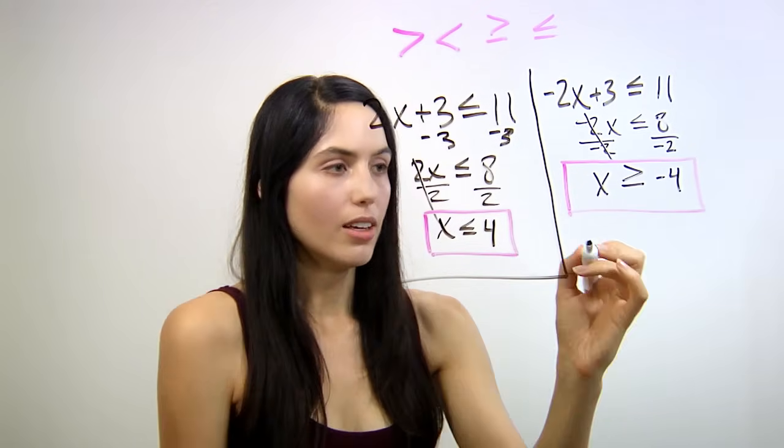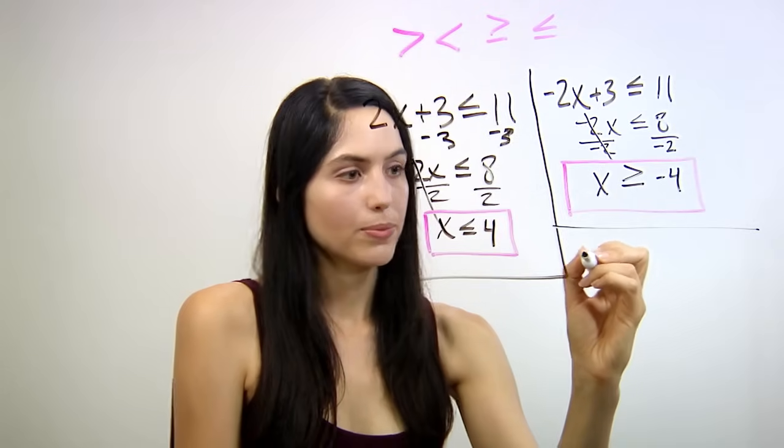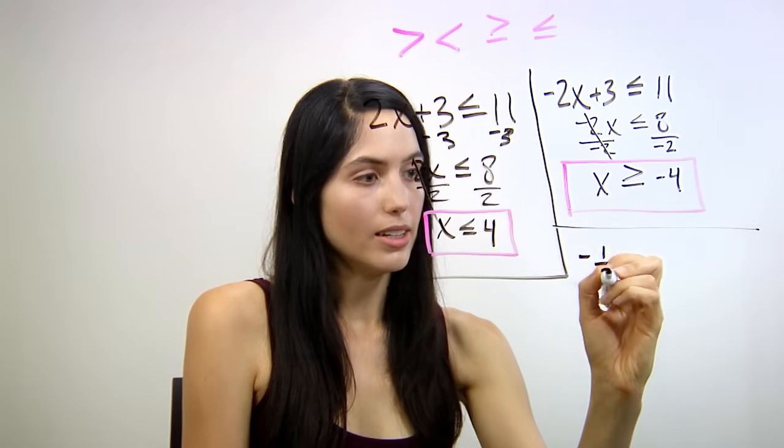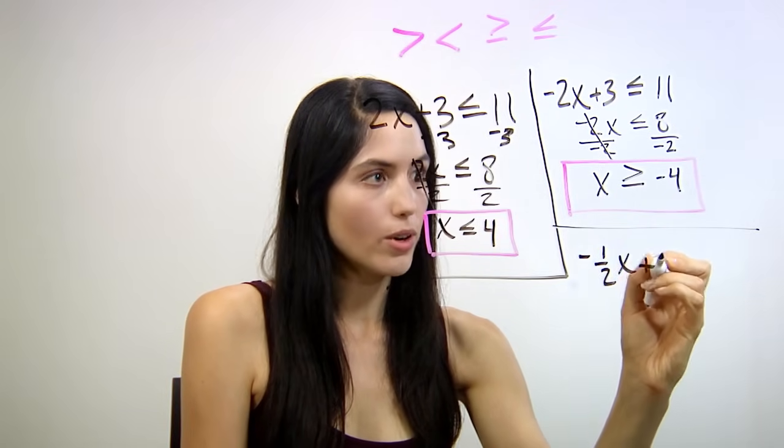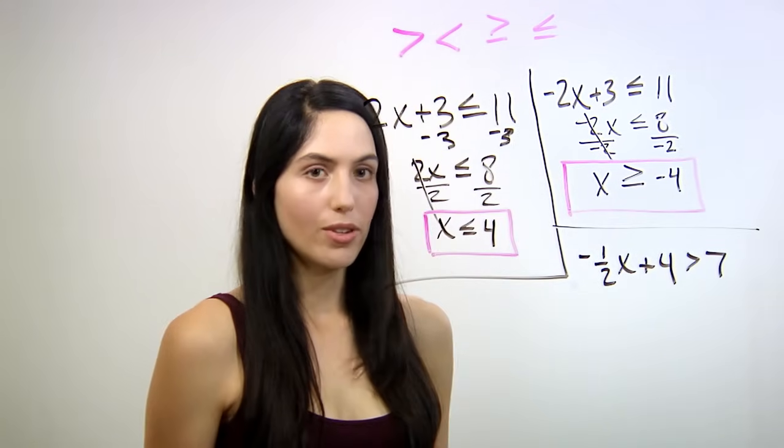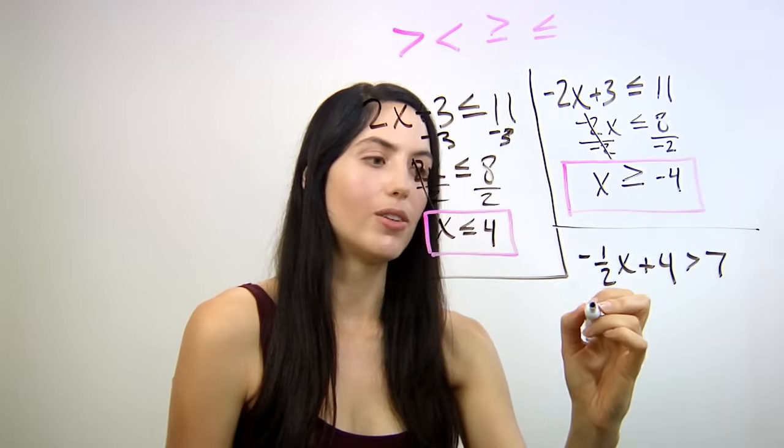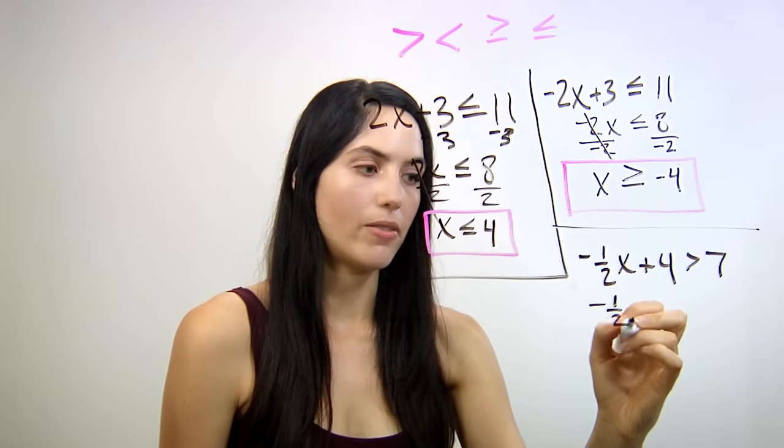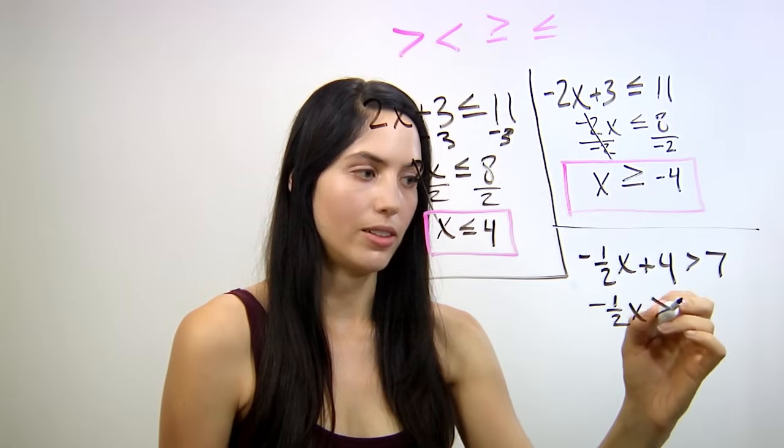One more example. Say that you have negative one-half x plus 4 is greater than 7. First step would be to subtract 4 from both sides, so you would have negative one-half x is greater than 3.